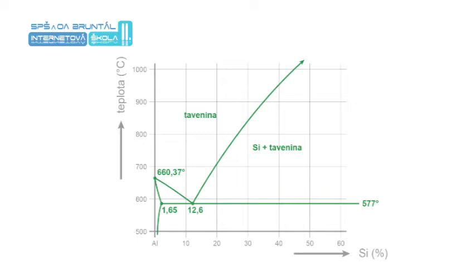The best-known foundry aluminum alloys are silumins - alloys of aluminum and silicon. In the video we have the binary equilibrium system aluminum-silicon. On this diagram, because it belongs among simple systems, we will explain individual concepts.